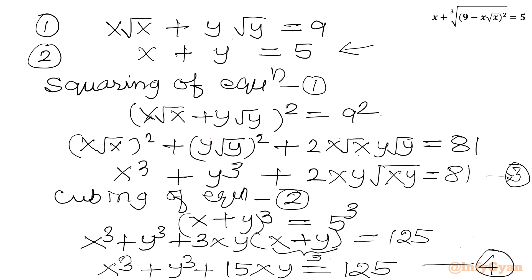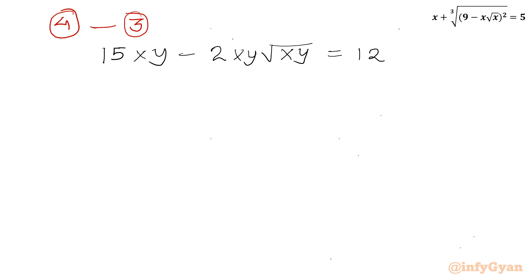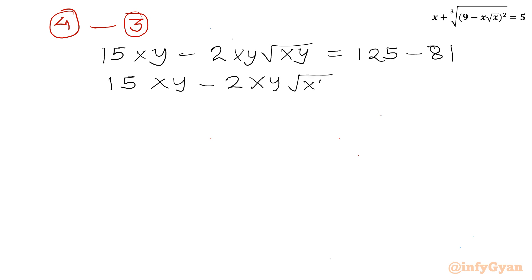Now I will compute equation 4 minus equation 3. The x cubed plus y cubed terms cancel. We get 15xy minus 2xy root xy equals 125 minus 81, which gives 15xy minus 2xy times root xy equal to 44.